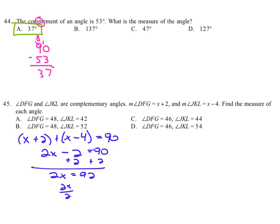2X divided by 2 equals 92 divided by 2, or X equals 46 degrees. OK? That's not what the answer is, though,